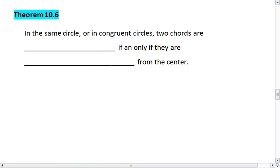This brings us to theorem 10.6. Theorem 10.6 tells us that in the same circle or congruent circles, two chords are congruent if and only if they are equidistant from the center.